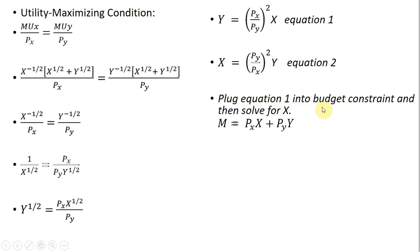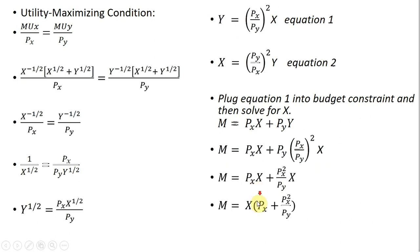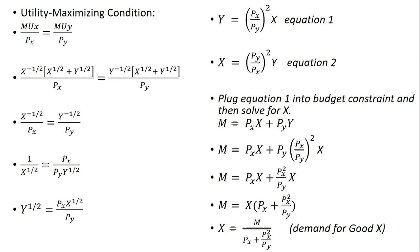The next step is we're going to plug equation 1 into the budget constraint and then solve for good x. Here's the consumer's budget constraint — m is income, we have the price of good x times units of x plus price of good y times units of good y. Making our substitution for y, py divided by py squared just leaves us with py in the denominator. Factoring out an x term and then dividing everything through by what's in parentheses gives us the demand for good x.